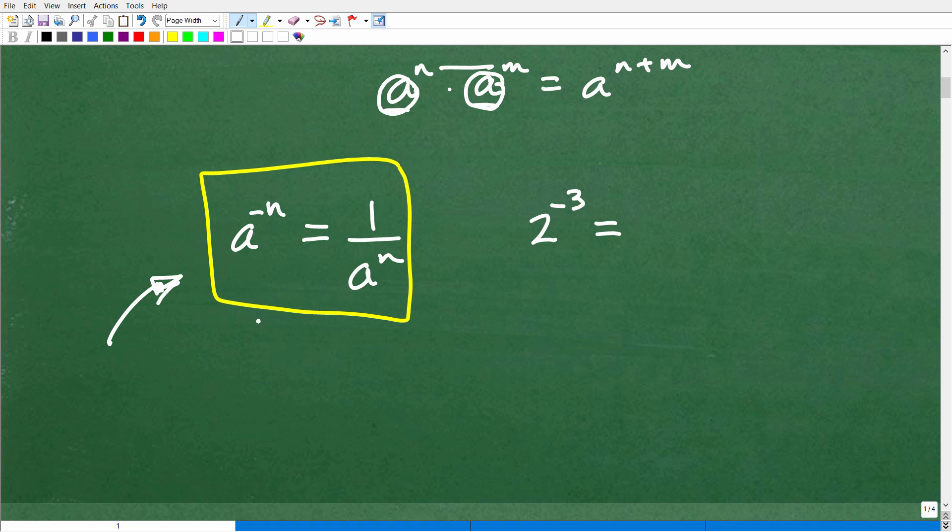So let's talk about the rule. This is the property. So a to the negative n is equal to 1 over a to the n. Or like, okay, that makes it pretty straightforward. But now let's apply that. So if I have 2 to the negative third power,